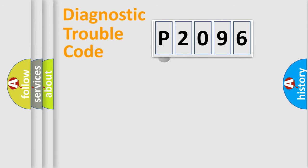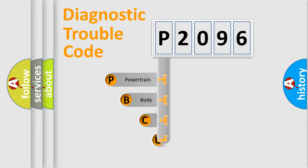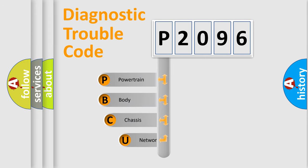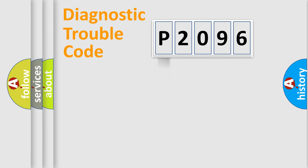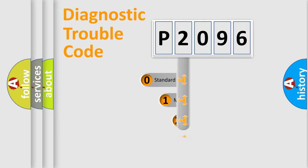First, let's look at the history of diagnostic fault code composition according to the OBD2 protocol. We divide the electric system of the automobile into four basic units: powertrain, body, chassis, and network. This distribution is defined in the first character of the code.